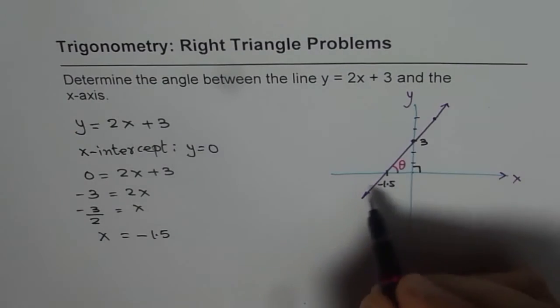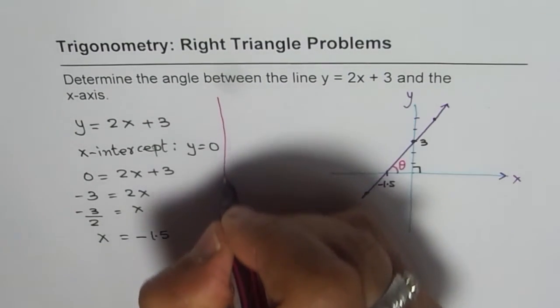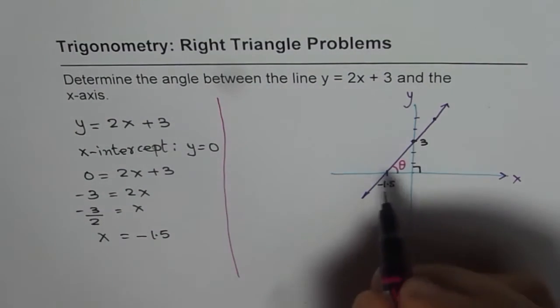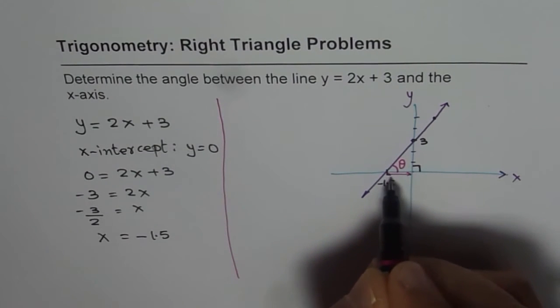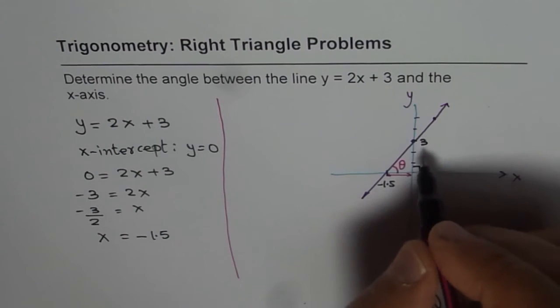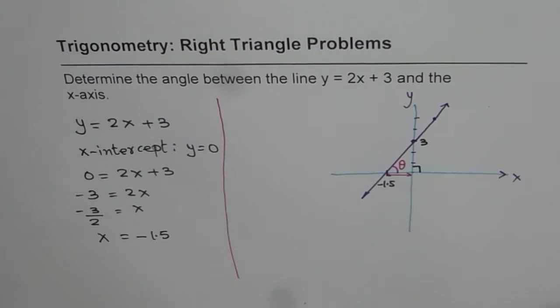Now we have a triangle here whose base and height is known to us. So that distance is the base, or you can say the adjacent side. And this becomes the opposite side.